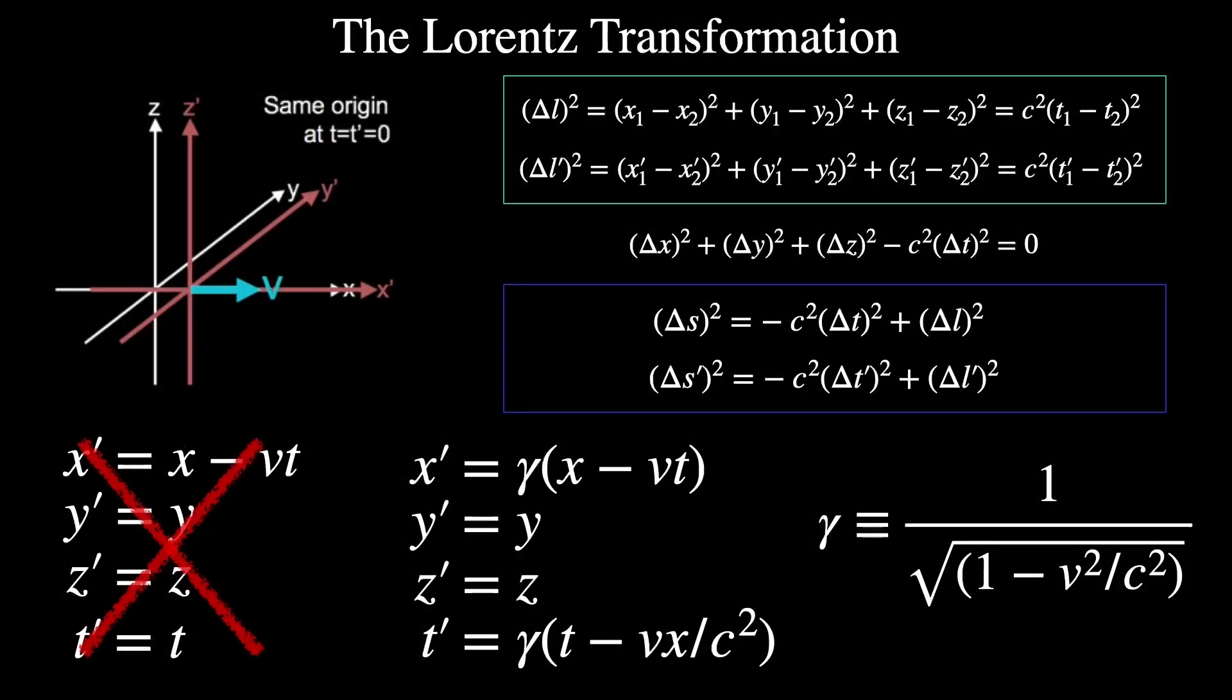After Michelson and Morley revealed their failed attempt to find the ether wind, many physicists including Woldemar Voigt, George Fitzgerald, Joseph Larmer, and Hendrik Lorentz were all researching what Maxwell's equations meant and how to accommodate the staggering null result.